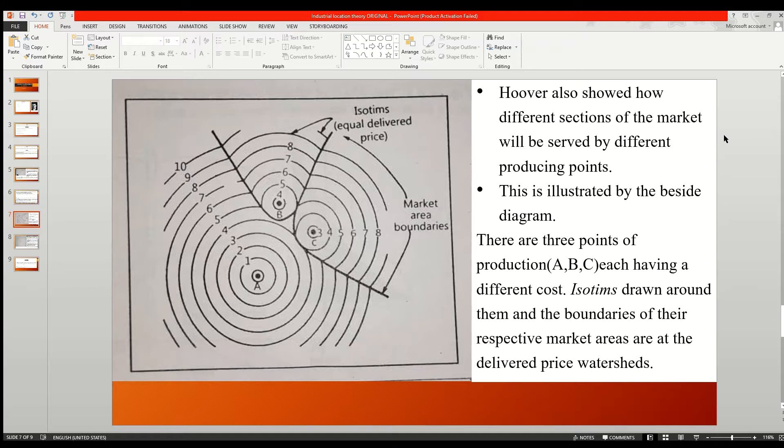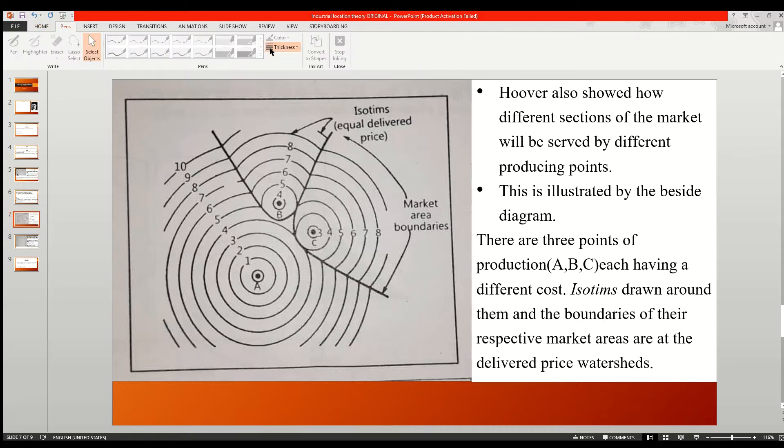In this video we will discuss the next phase of Hoover's theory. He considered if there will be more producing units in a small area, then what will be the case? How can we determine the market locations?